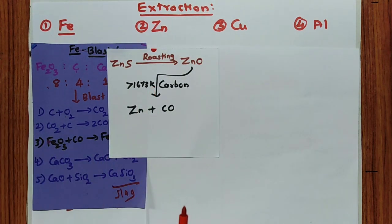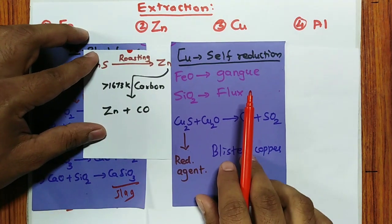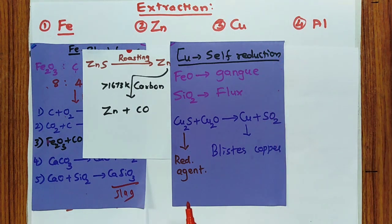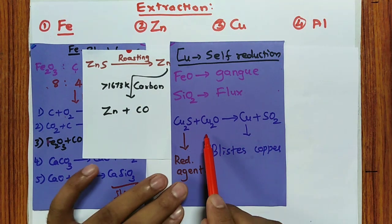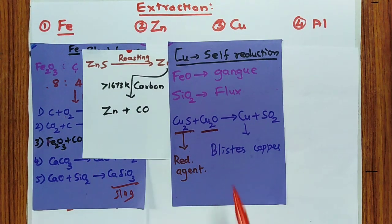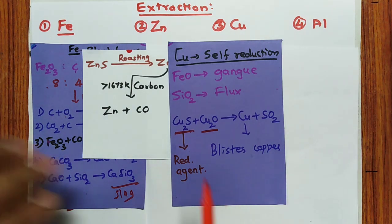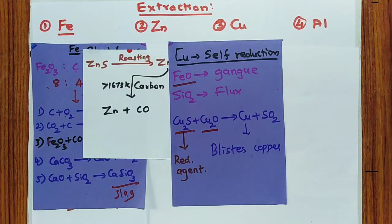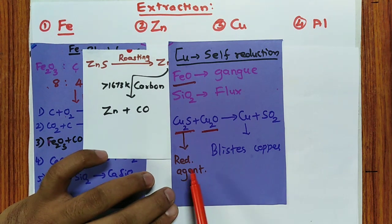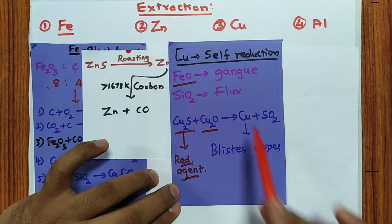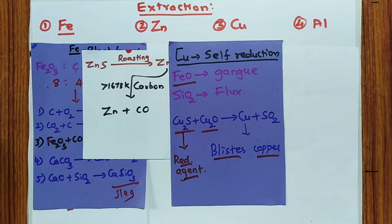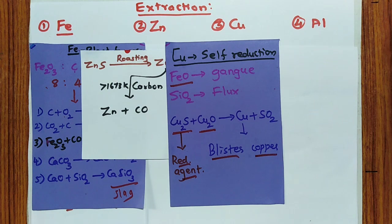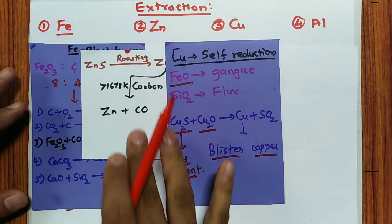Extraction of copper involves a very important self-reduction process. Cu₂O is reduced by Cu₂S — this is self-reduction because Cu₂S is formed in the reaction itself; no external reducing agent is added. FeO is the gangue and SiO₂ is the flux. Cu₂S acts as the reducing agent, reducing Cu₂O to give blister copper. It is called blister copper because SO₂ gas escapes from the copper, giving it a blistered appearance.